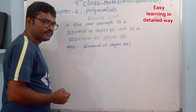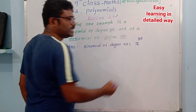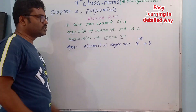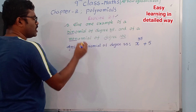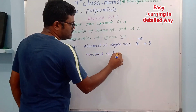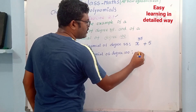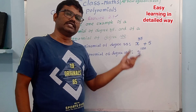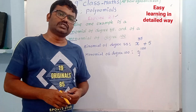For a binomial of degree 35, let's consider variable x: x to the power of 35 plus another term gives a binomial where the highest power is 35, so the degree is 35 and it has two terms. For a monomial of degree 100: x to the power of 100 — the highest power of the variable is 100, so its degree is 100 and it is a monomial.